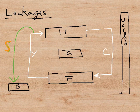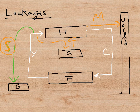Another leakage is in the form of taxation, because some of the money we earn is taxed by the government and leaks away from the circular flow. And thirdly, when households spend money, they often spend it on imported goods. So we have three leakages: savings, taxes, and imports.